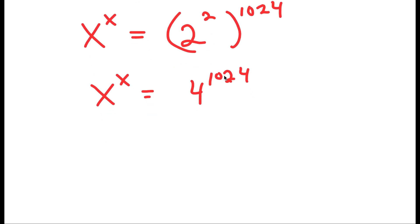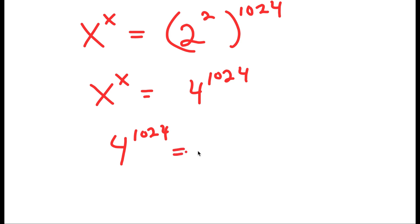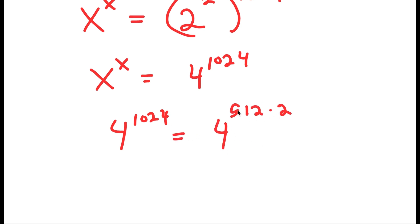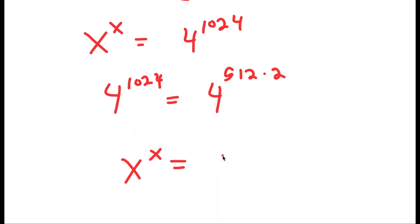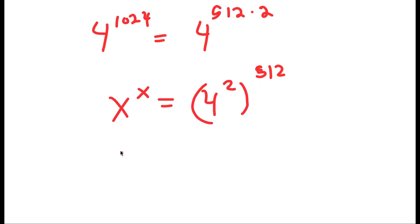Next, I rewrite 4 to the power of 1,024 as 4 to the power of 512 times 2, and using the same property this becomes 4 to the power of 2 to the power of 512. Since 4 to the power of 2 is 16, this simplifies to 16 to the power of 512.